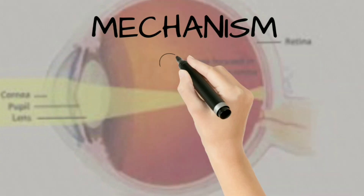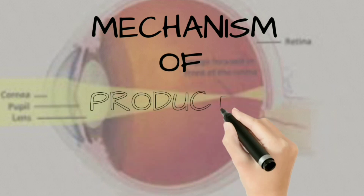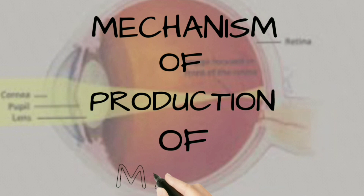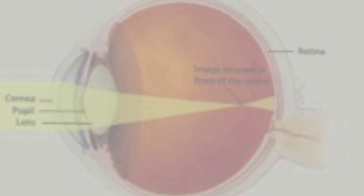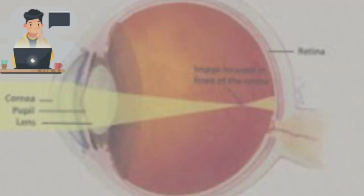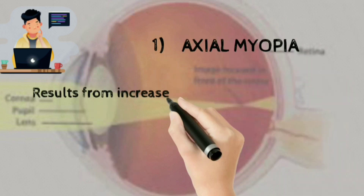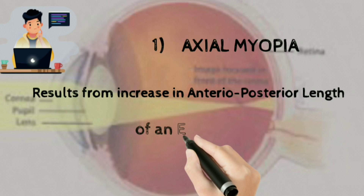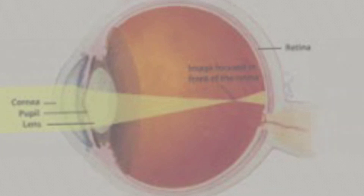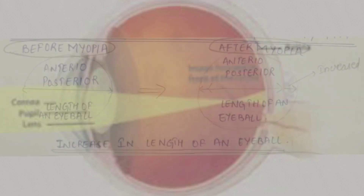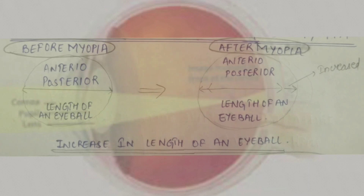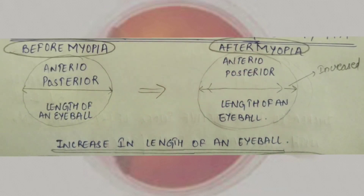The question is how the mechanism of production of myopia works. Some myopia types are produced due to axial or curvature causes. The first type is axial myopia. Axial myopia results from an increase in the anterior-posterior length of the eyeball. As shown in the image, the anterior-posterior diameter of the eyeball is increased after the onset of myopia.